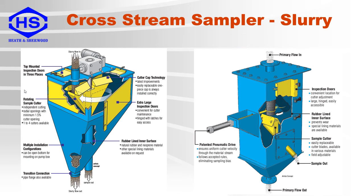These are two other types of cross-stream samplers. They can be used as primary samplers depending on the process flow, or as secondary or tertiary samplers. Both are connected to a vertical pipe where the process slurry comes from the top and discharges out the bottom. The one on the left is a rotary vesen sampler, where the cutter rotates across the incoming slurry stream. The one on the right is a moving inlet sampler, where the hose is moved across the cutter.